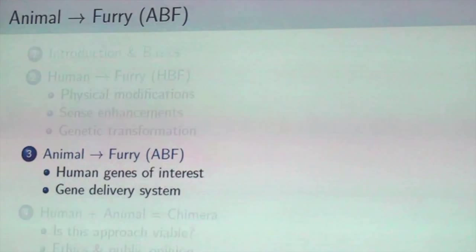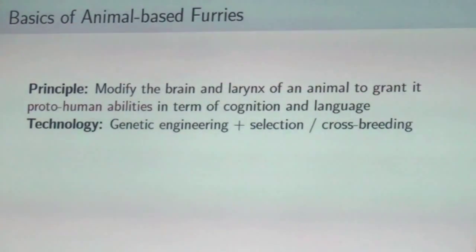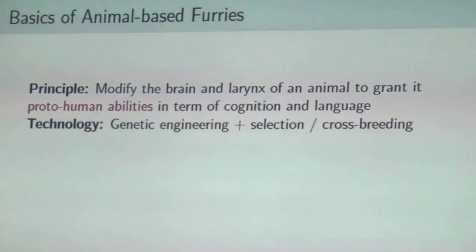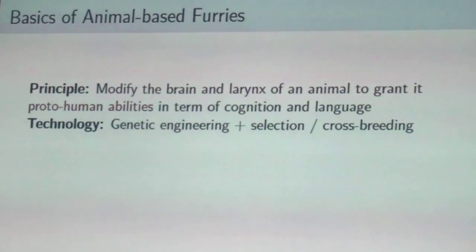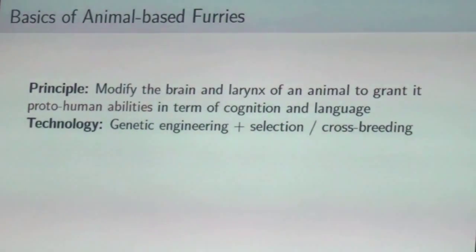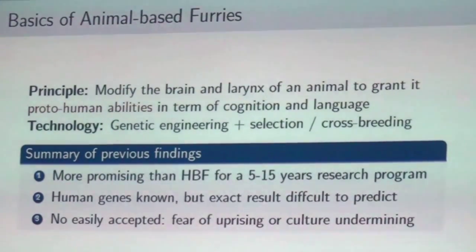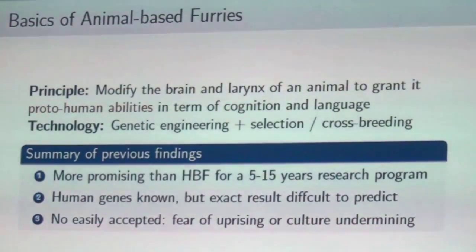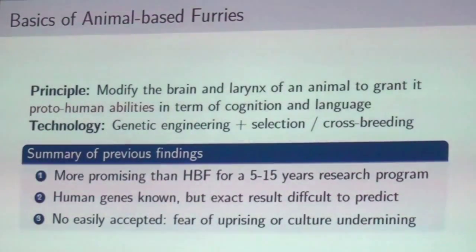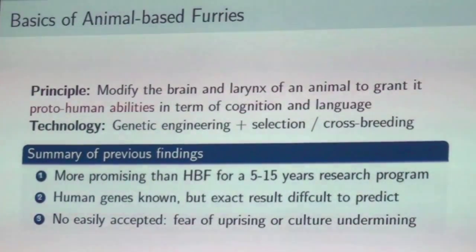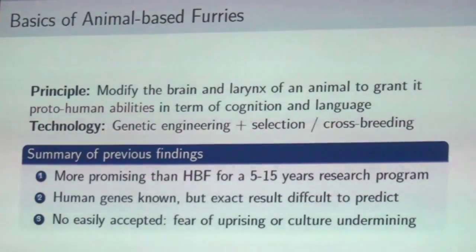Now, animal-based approaches — another very promising possibility. Here, we use genetic engineering to modify the brain and larynx of an animal to give it a few human-like abilities, like cognition and the possibility to speak. This is a lot more promising than human-based theories, at least for a mid-term research program. We know a lot of the human genes that can be used, but the exact result is difficult to predict because nobody has tried before, and the engineered animals will probably not be easily accepted into human society.